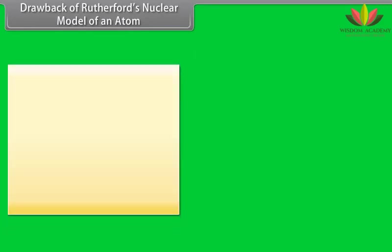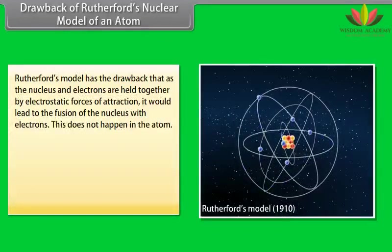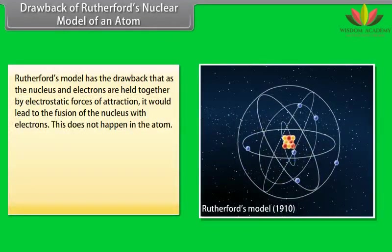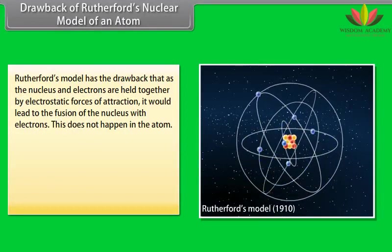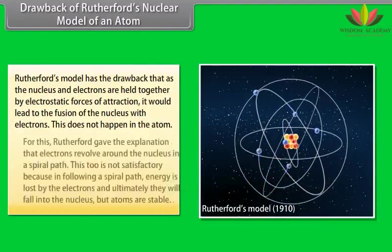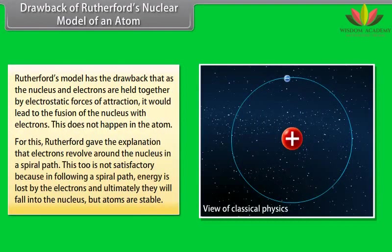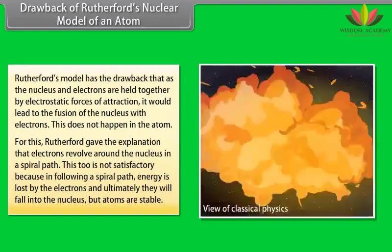Drawback of Rutherford's nuclear model has the drawback that as the nucleus and electrons are held together by electrostatic forces of attraction, it would lead to the fusion of the nucleus with electrons. This does not happen in the atom. For this, Rutherford gave the explanation that electrons revolve around the nucleus in a spiral path. This too is not satisfactory because in following a spiral path, energy is lost by the electrons and ultimately they will fall into the nucleus but atoms are stable.